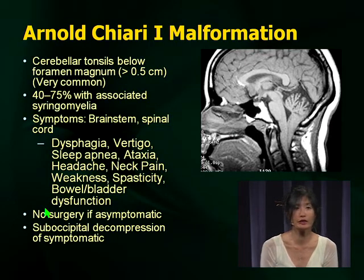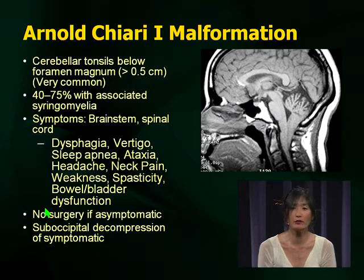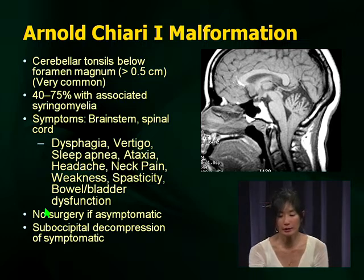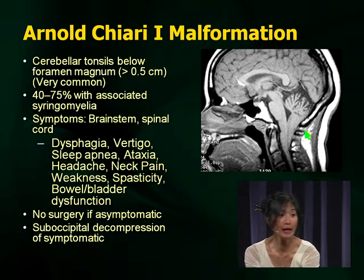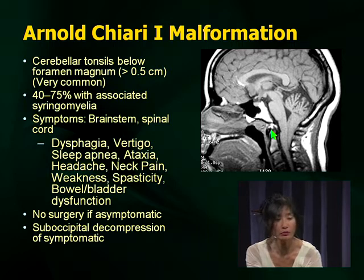Chiari malformations are seen very frequently. As neurologists, we've done more MRI scans and the awareness of Chiari malformations has increased. The rule for Chiari malformations is protrusion of the cerebellar tonsils 0.5 centimeters below the foramen magnum — you draw a line at the foramen magnum and if it's more than 0.5 centimeters, you have a Chiari malformation.